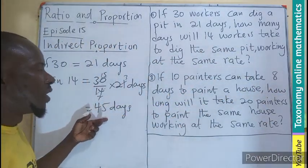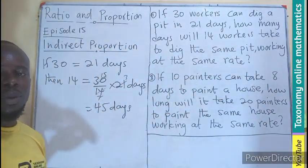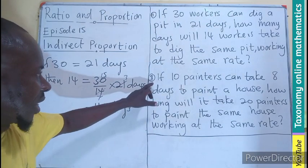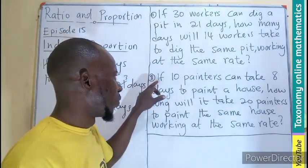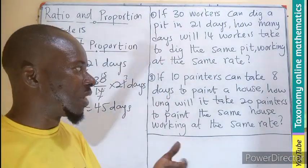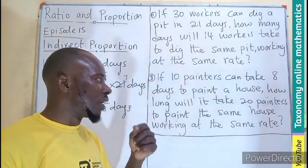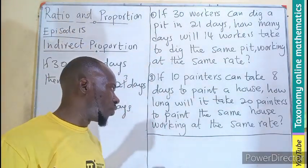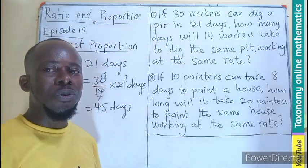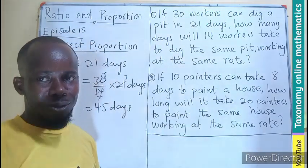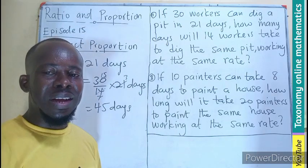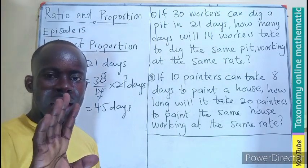Both methods give us 45 days. So 40 workers will require 45 days to dig the same pit. The second question is for you: if 10 painters can take 8 days to paint a house, how long will it take 20 painters to paint the same house working at the same rate? Solve that and share your answer in the comment section. Bye bye.